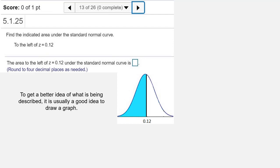Because this is area to the left and the standard normal distribution table values are area to the left, all we're going to have to do is find that table value, and that table value will represent the area we're looking for.